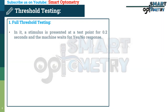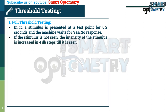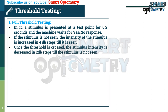Full threshold testing. In it, a stimulus is presented at a test point for 0.2 seconds and the machine waits for a yes or no response. If the stimulus is not seen, the intensity of the stimulus is increased in 4 decibel steps until it is seen. Once the threshold is crossed, the stimulus intensity is decreased in 2 decibel steps until the stimulus is not seen.